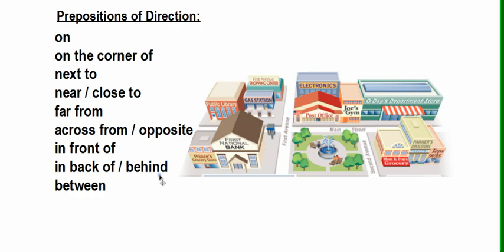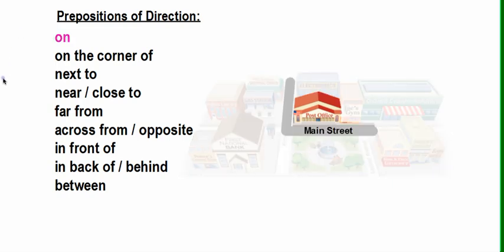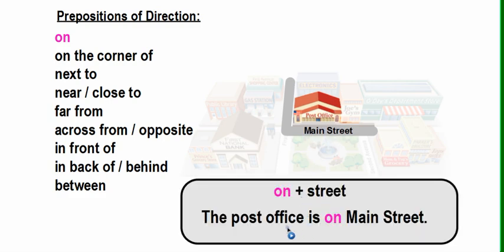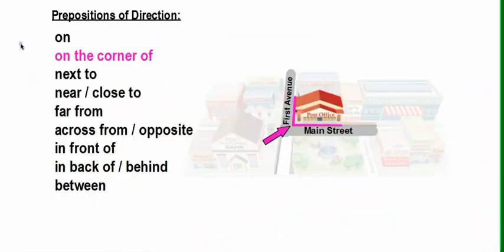Let's look at the difference. First, 'on' — when we use 'on,' we indicate the location of something on a street. For example, the post office is on Main Street. Again, 'on' is for the street that something is located on.